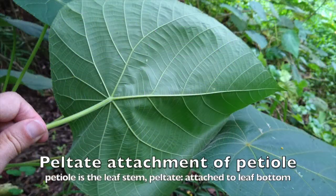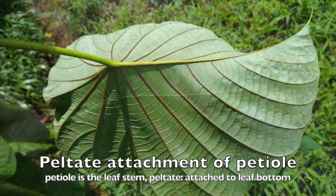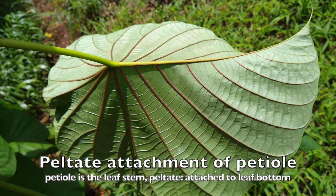Sometimes the manner in which the petiole — the leaf stem — attaches to the leaf is also an important identification characteristic. When the leaf stem attaches to the bottom of the leaf, as seen in the Macaranga carolinensis and here in the Merimia peltata, that is called peltate attachment, and that is also considered a leaf morphology characteristic.